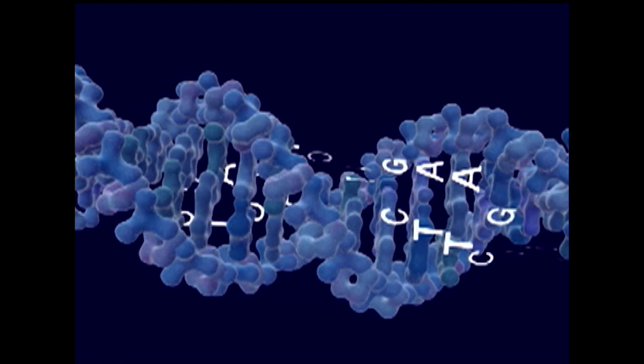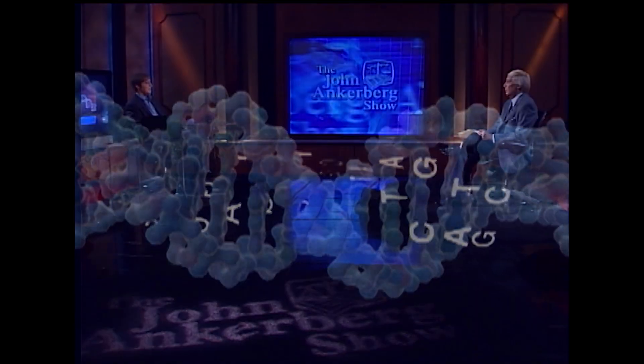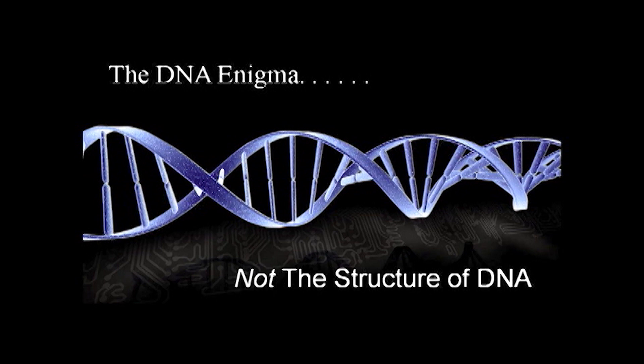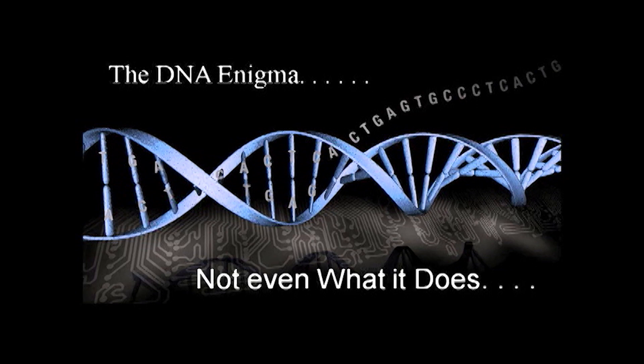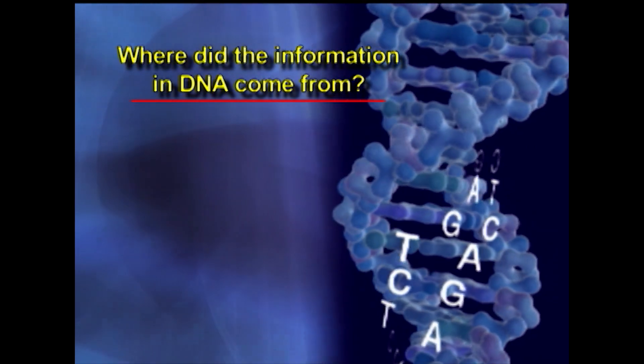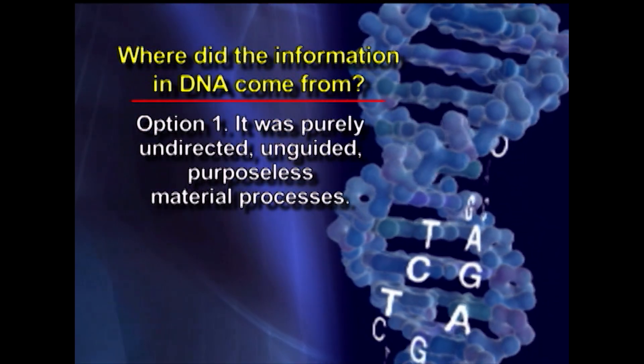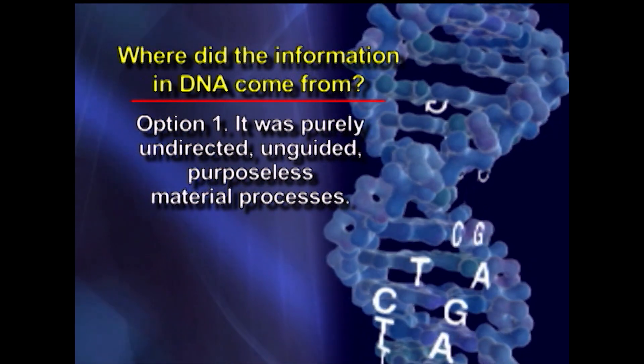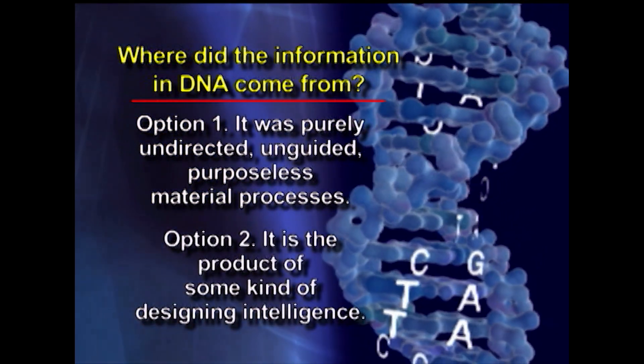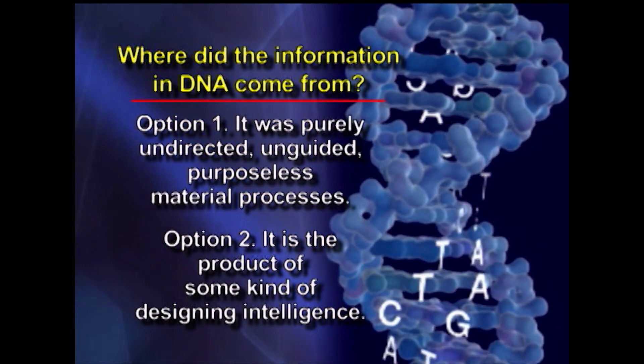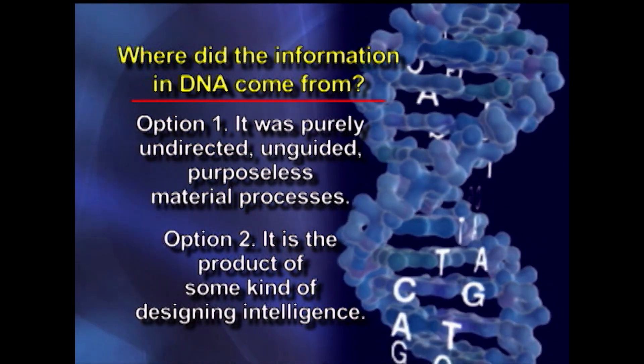Stephen, where did this information come from? Well, that's the $64,000 question, as they used to say. I call it the DNA enigma. The DNA enigma is not what is the structure of DNA — Watson and Crick solved that mystery. It's not even what does the information do — we've just seen that in the animation. The question is where did the information come from? There are two basic answers: either the information arose through purely undirected, unguided, purposeless material processes, or it's the product of some kind of designing intelligence — what we call intelligent design. Those were the two options, and that's what I set out to investigate as I became fascinated with this question in the mid-1980s.